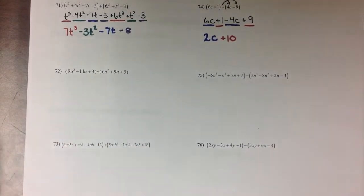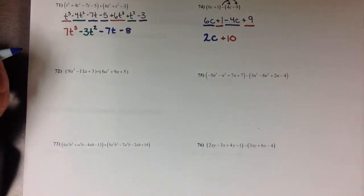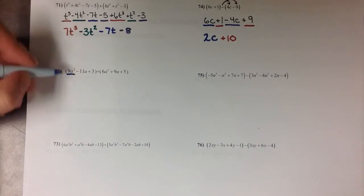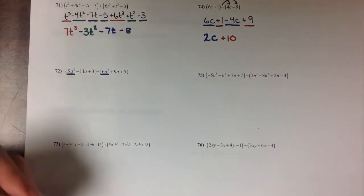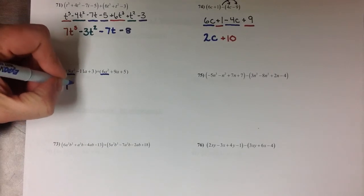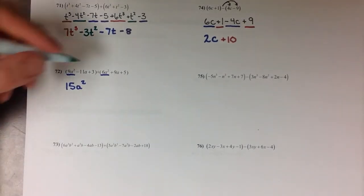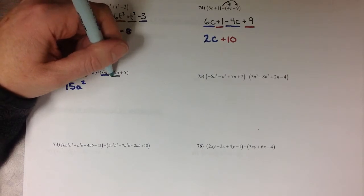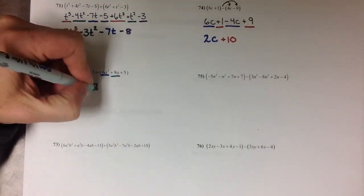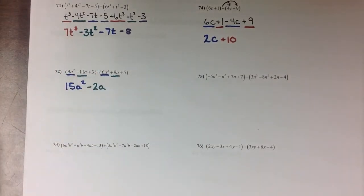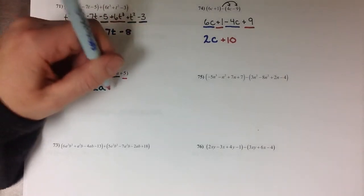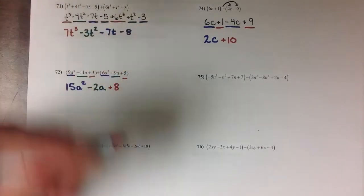Looking at these next examples, another one with addition. And this time I'm going to take a little bit of a shortcut. So since this is addition, the signs aren't going to get changed inside the second polynomial. So I'm going to look for which terms are like that I can combine right off the bat. So I see that I have a 9a² and another positive 6a², which is going to give me a total of 15a². A -11a and a positive 9a gives me -2a. And then a positive 3 and a positive 5 gives me a positive 8.